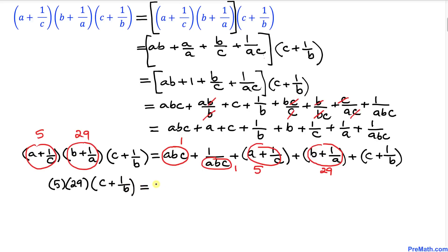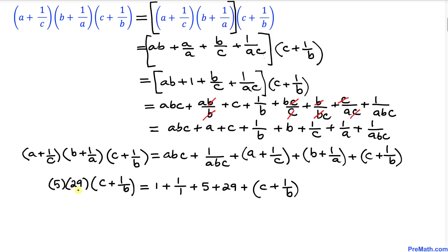On the right-hand side we get 1 plus 1 over 1, plus 5, plus 29, plus (c plus 1 over b). Simplifying: 5 times 29 is 145, so we have 145 times (c plus 1 over b) equals 1 plus 1 plus 5 plus 29 plus (c plus 1 over b), which is 36 plus (c plus 1 over b).